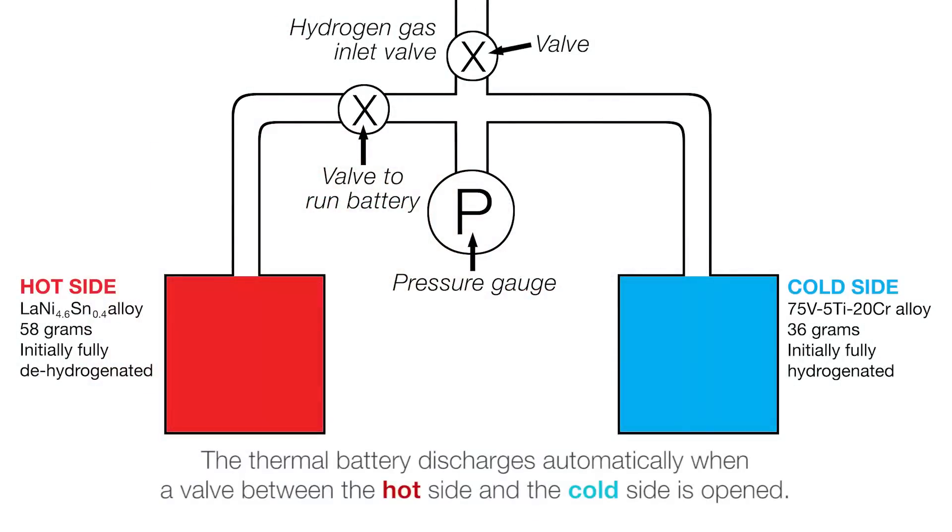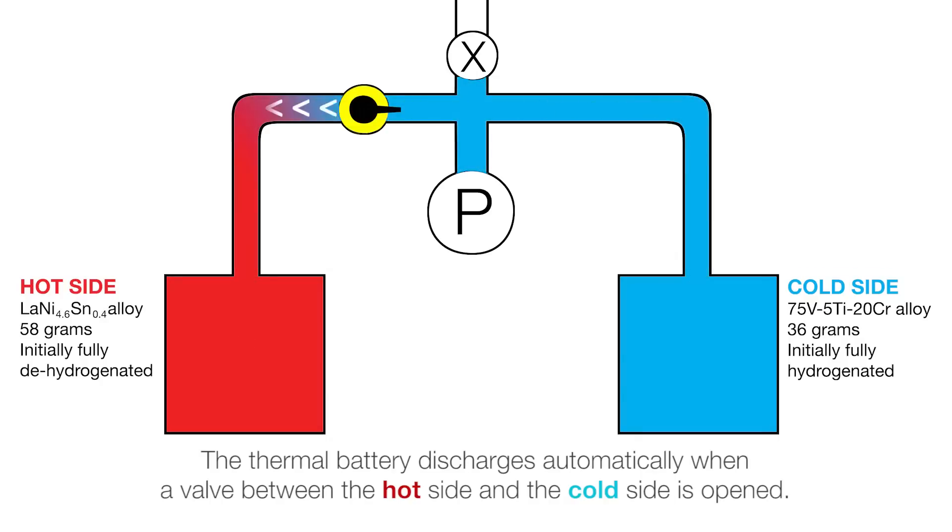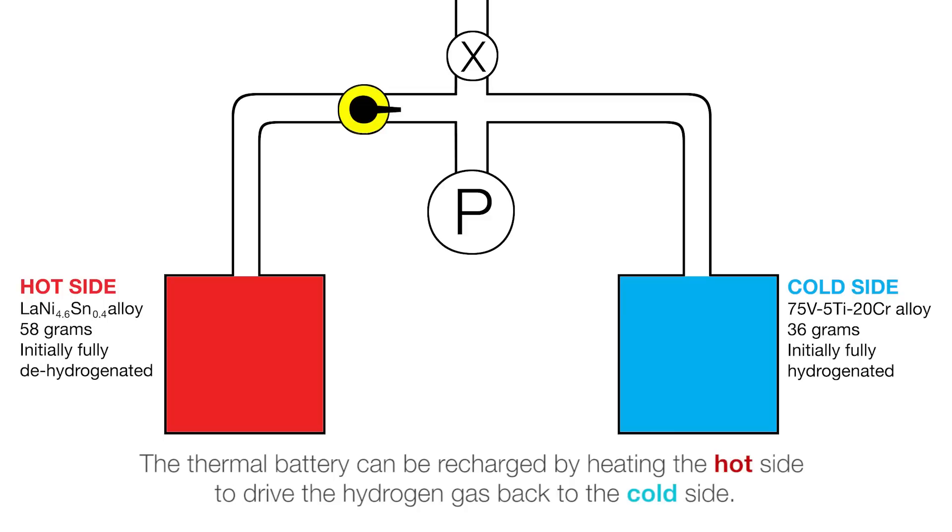The thermal battery discharges automatically when a valve between the hot side and the cold side is opened. The thermal battery can be recharged by heating the hot side to drive the hydrogen gas back to the cold side.